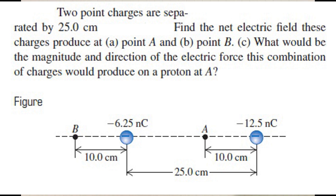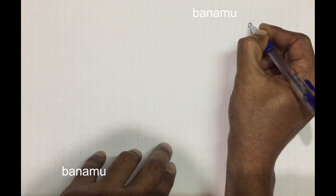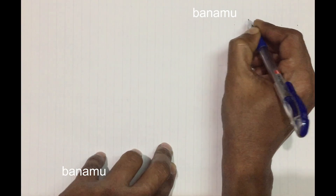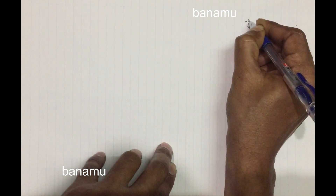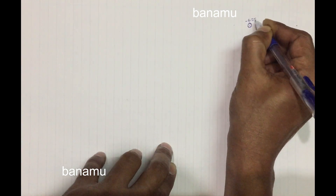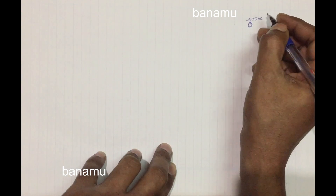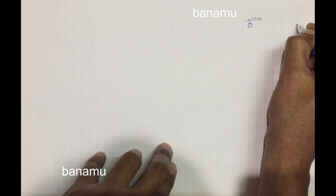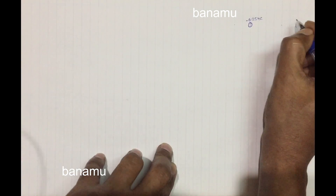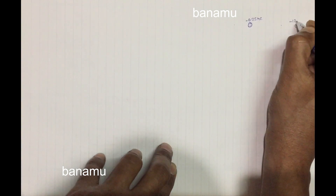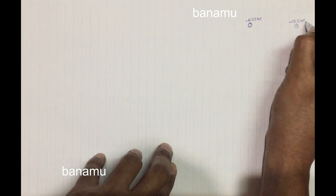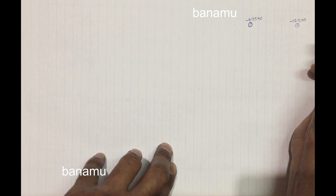Draw the figure. Let us consider one charge is minus 6.25 nanocoulombs and another charge is minus 12.5 nanocoulombs. The distance between the two charges is 25 cm.